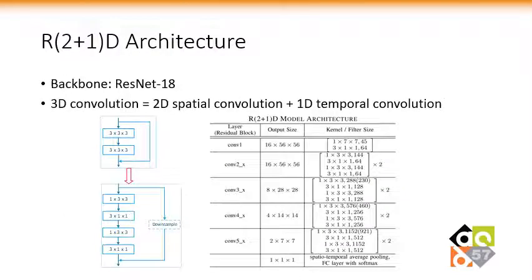Additionally, several novel 3D CNN structures are emerging. One of them is R2+1D, based on a ResNet backbone with much fewer parameters and higher classification accuracy. It splits each 3D convolution into a 2D convolution in the spatial dimensions and a 1D convolution in the temporal dimension. The structure we use contains 40 convolutional layers.